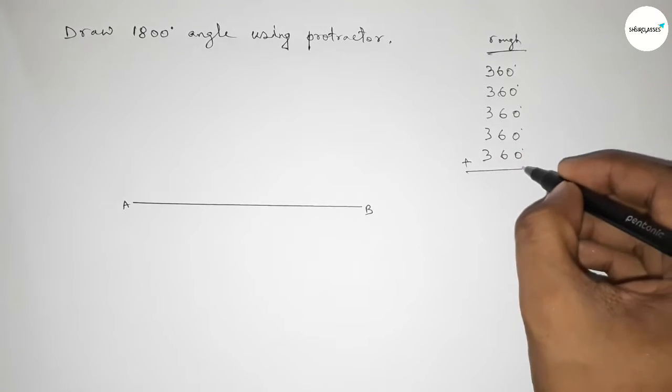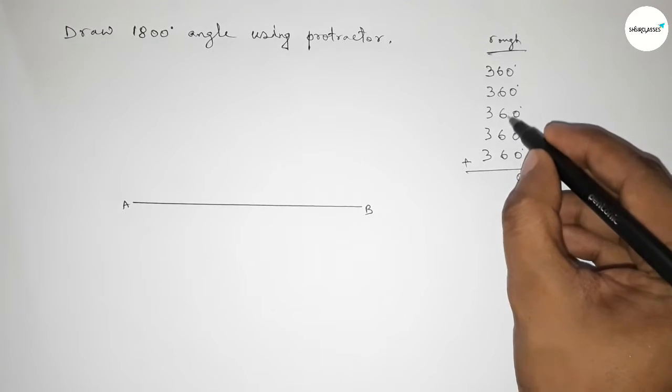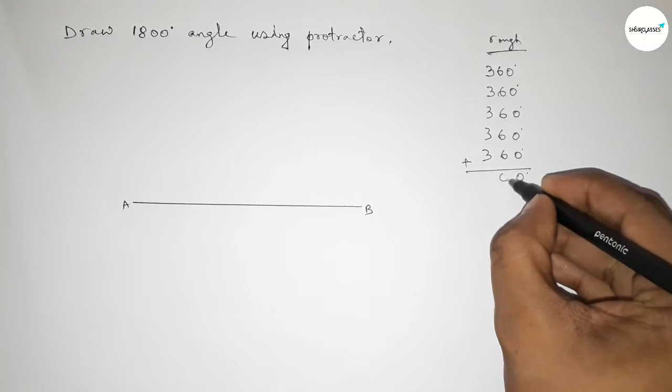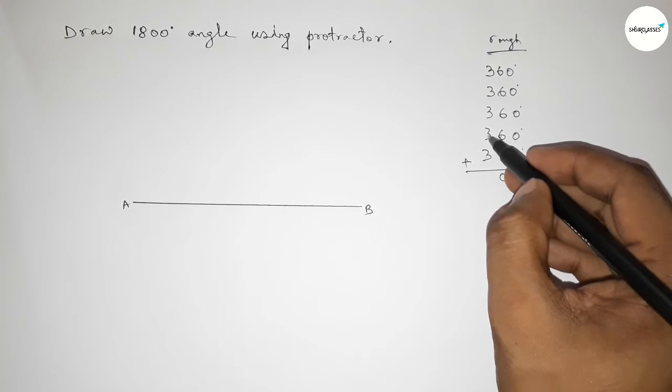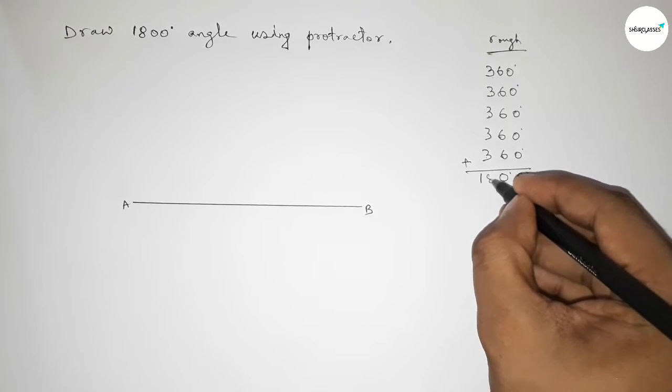So adding 360 degree angle five times: this is total zero, now this is 30, 30 carry 3, and this is 15 plus 3, so this is total 18. So 1800 degree angle.